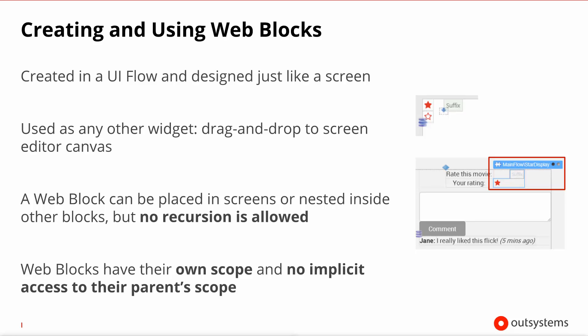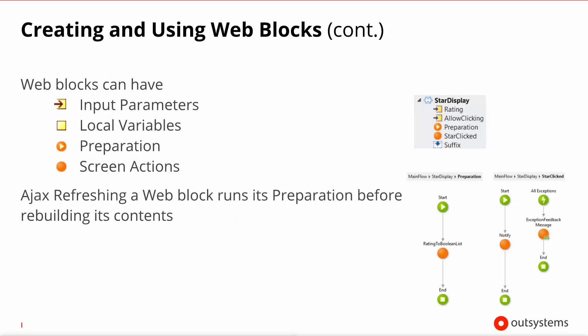It's important to note that web blocks have their own scope and cannot implicitly see anything on the scope of the screen or another web block where they're inserted. The way to get the needed context into a web block is to use input parameters, just like you would on a screen. Once inside the web block, the behaviors and ways you implement them are very similar to screens.